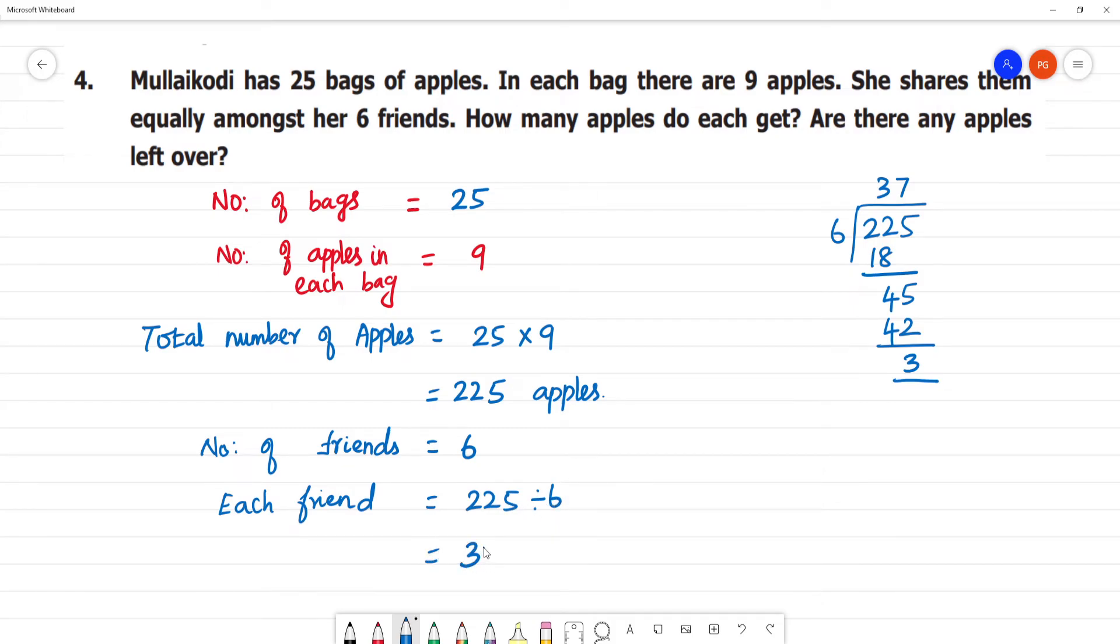So each friend will get 37 apples. 225 divided by 6 equals 37 apples per friend.